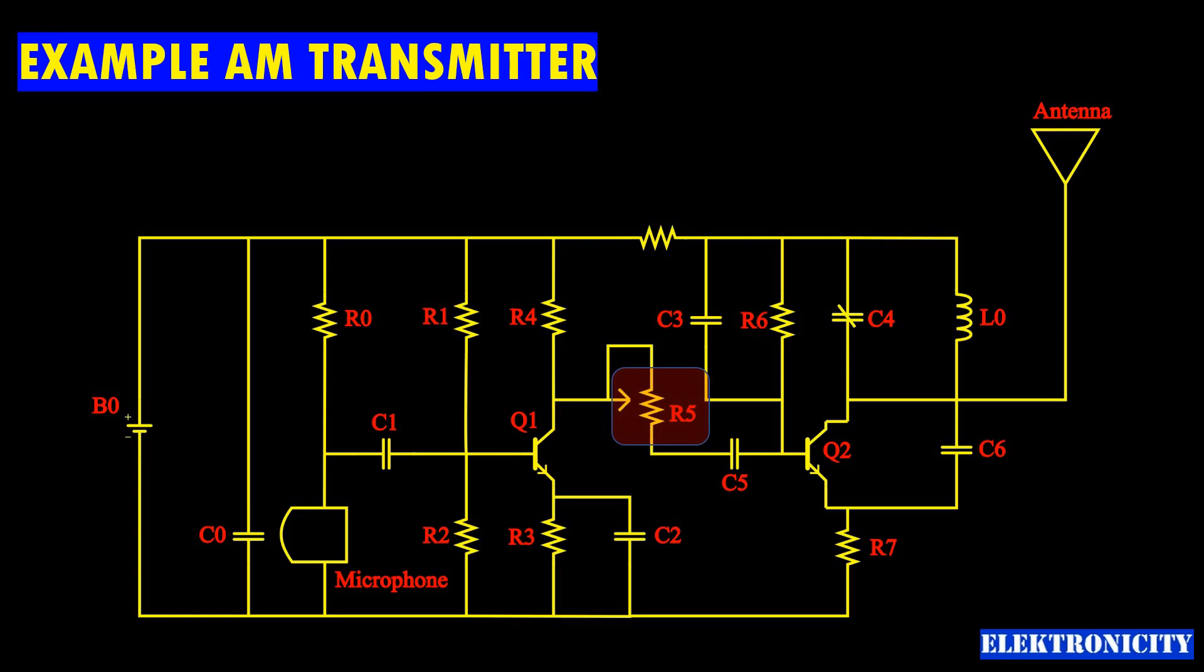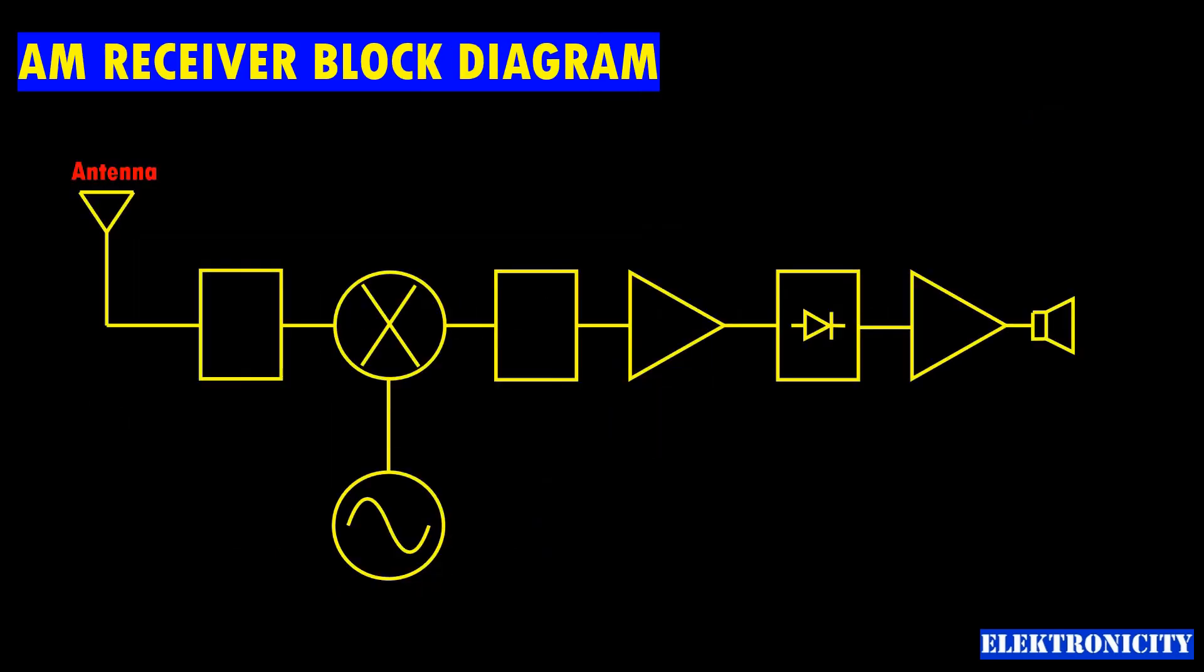Now let's switch gears and look at the AM receiver, particularly focusing on the superheterodyne receiver, which is amongst the most common types used in AM radios.